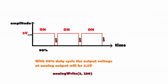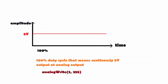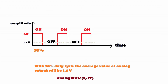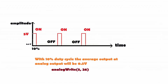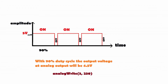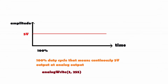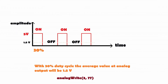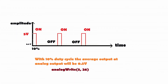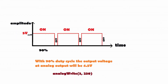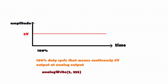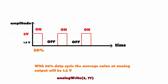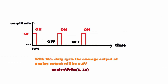The reason it is called pulse width modulation is that we are changing the width of the pulse. This is a fantastic technique to get analog output at the PWM pins of our Arduino boards.